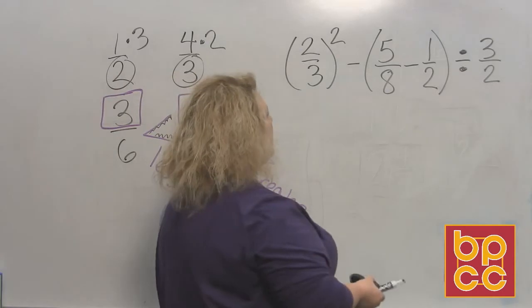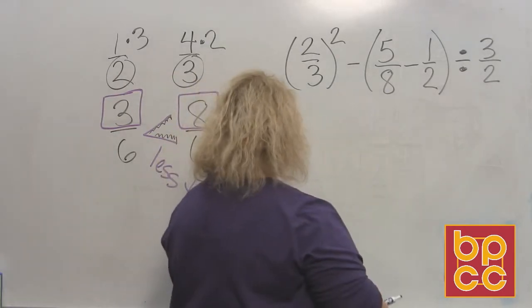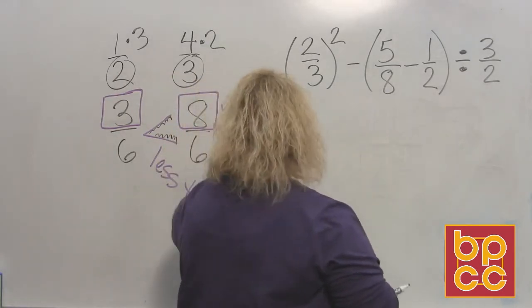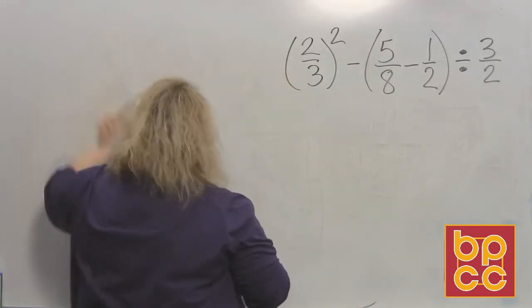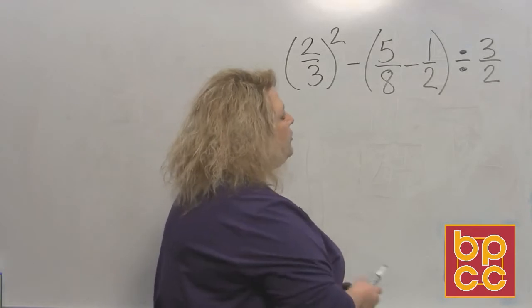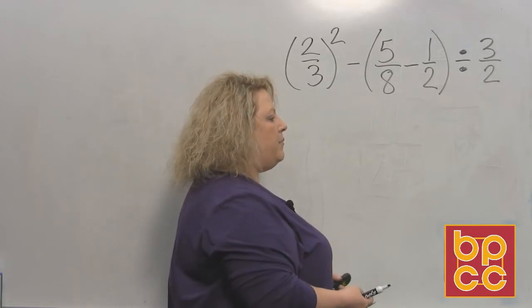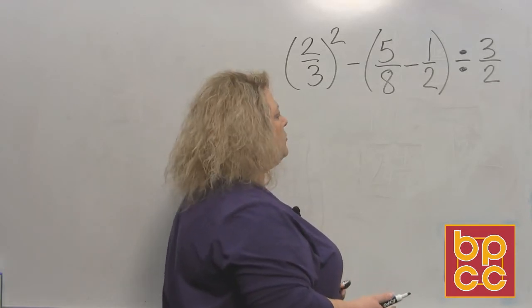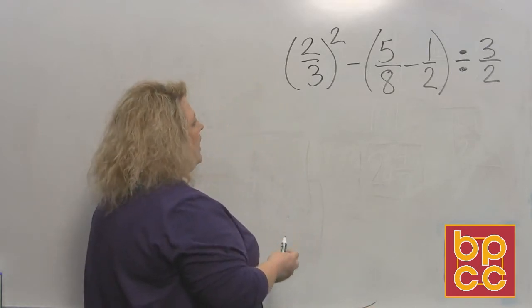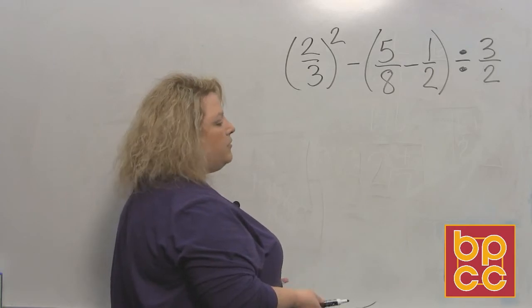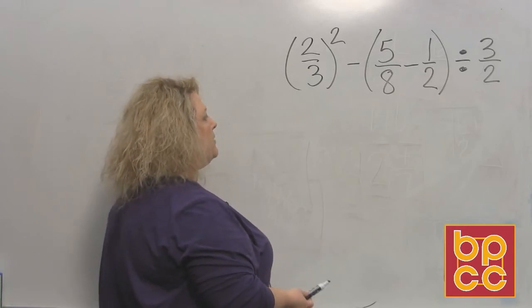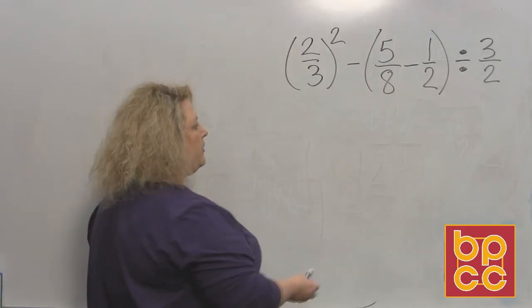Alright, the other problem we're going to do is an order of operations problem. I'm going to erase this now because I need a lot of room. When you do order of operations, you have to remember back from one of the very first modules. It said, please excuse my dear Aunt Sally. And the P stood for what? It stood for parentheses. So we have to do what's inside the parentheses first.